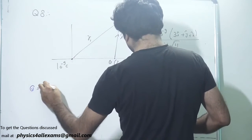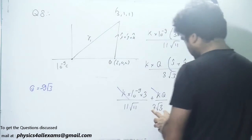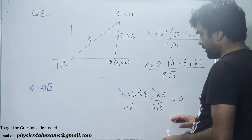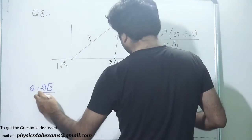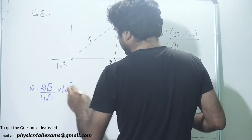Q will be 9 root 3 with negative sign. It will come on this side, 9 root 3 upon 11 root 11 into 10 to power minus 9 coulomb.